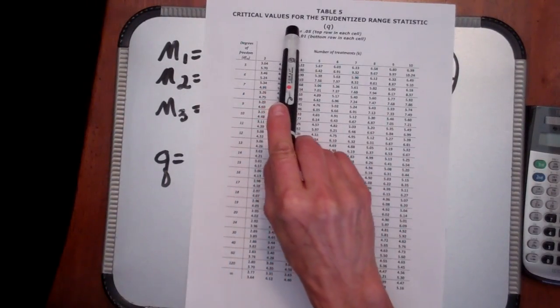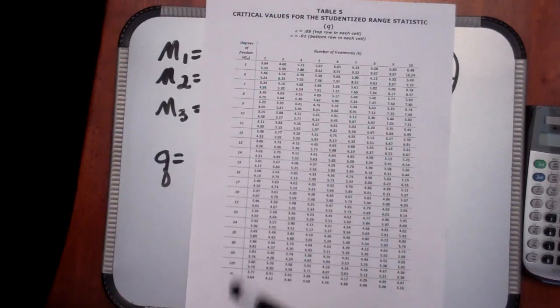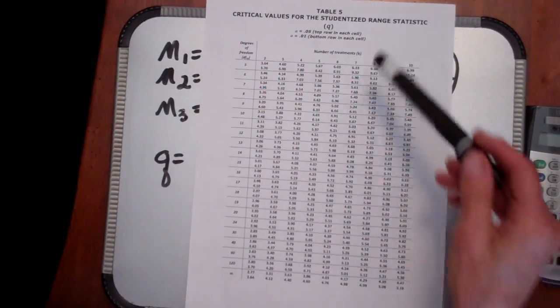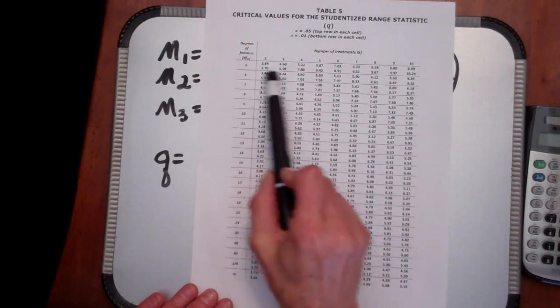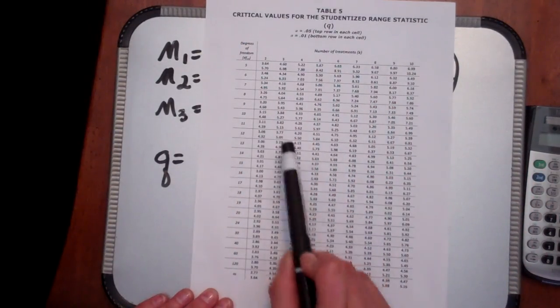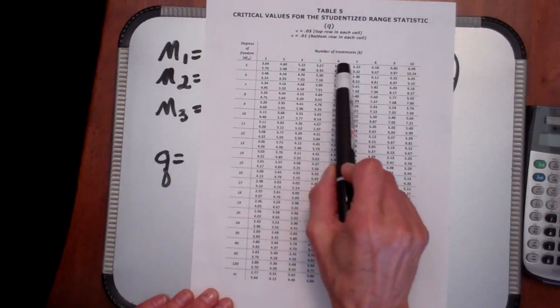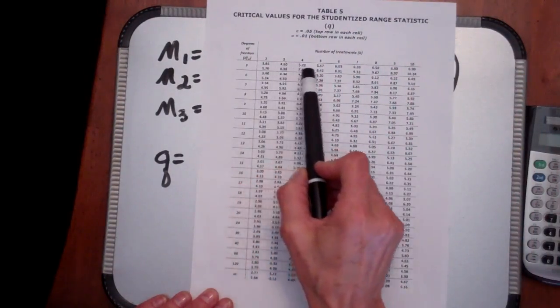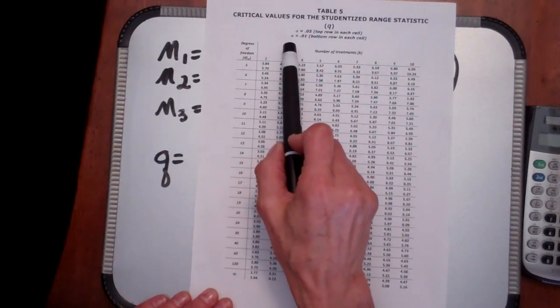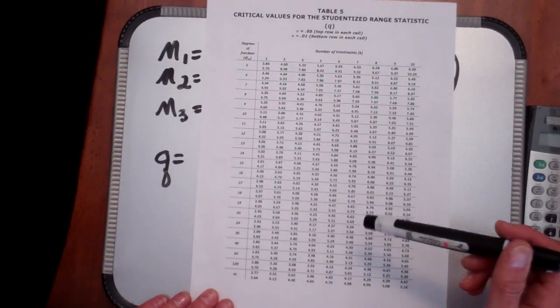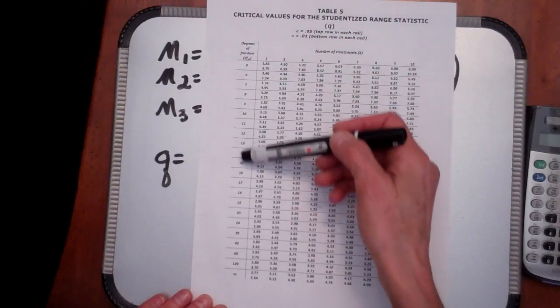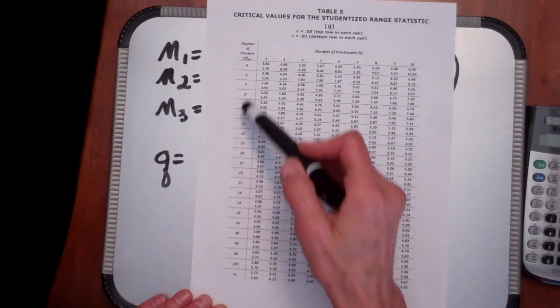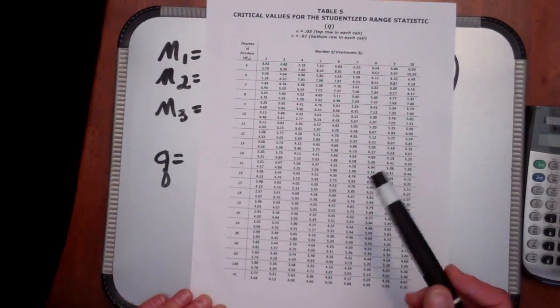This table is the critical values table for the studentized range statistic, otherwise referred to as Q. In this table you'll see that within each row there are actually two rows of numbers. The top row are values that are to be used when you are using alpha equals 0.05. The bottom row is to be used when you're using alpha equals 0.01. Down the left-hand side are your degrees of freedom within for the test that you've just conducted.